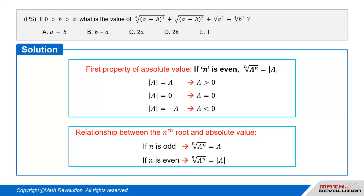Solution. Relationship between nth root and absolute value: if the nth root of a number a raised to the power of n is taken, the value depends on whether n is even or odd. If n is odd, the nth root of a to the power of n equals a. If n is even, the nth root of a to the power of n equals the absolute value of a.